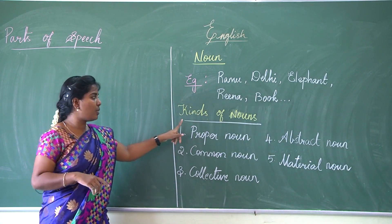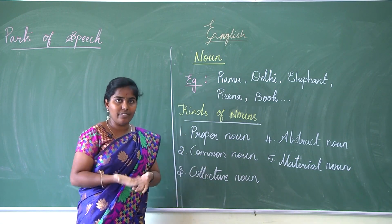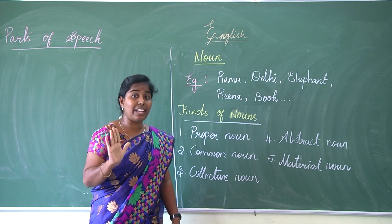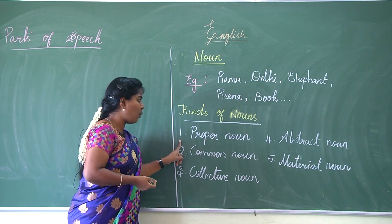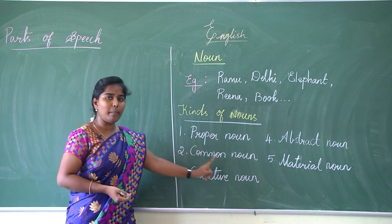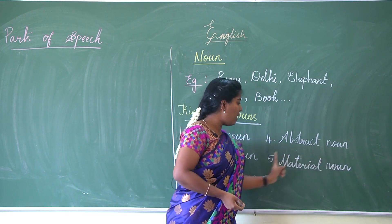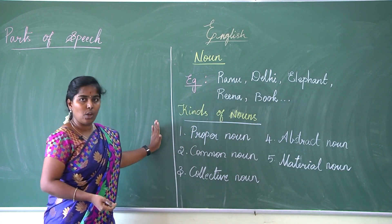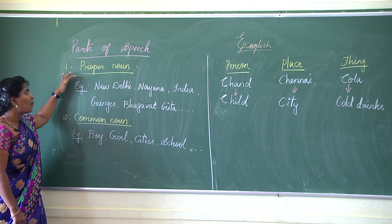Now we are moving on to the next topic: kinds of noun. How many kinds of nouns are there? Five kinds of nouns are there. We are going to take a quick look at all five. The first one is proper noun, second one is common noun, third one is collective noun, fourth one is abstract noun, and fifth one is material noun.